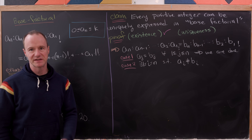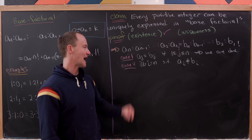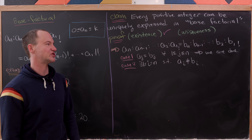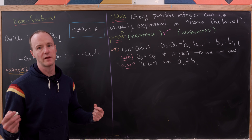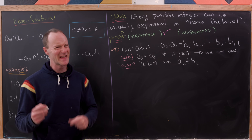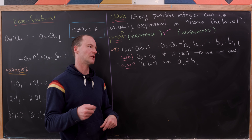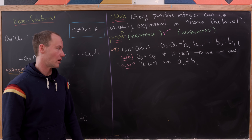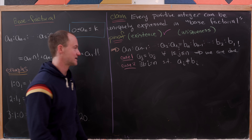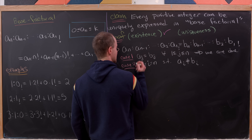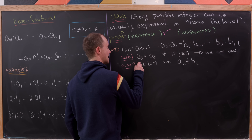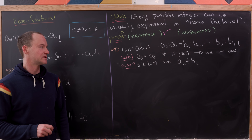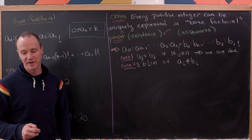The first case is that a_j equals b_j for all 1 ≤ j ≤ n — in other words, all of the digits are the same, but that's exactly what we want to show, so if that's the case we are done. The second case is they're not all the same: there exists some i between 1 and n where a_i is not equal to b_i.